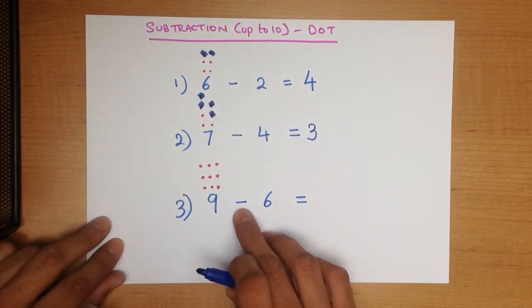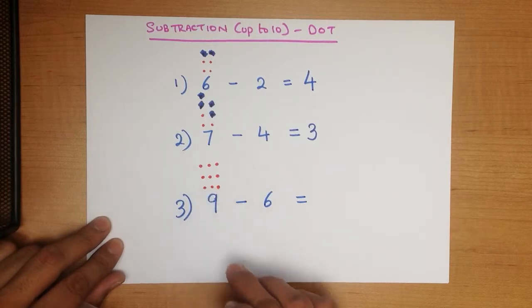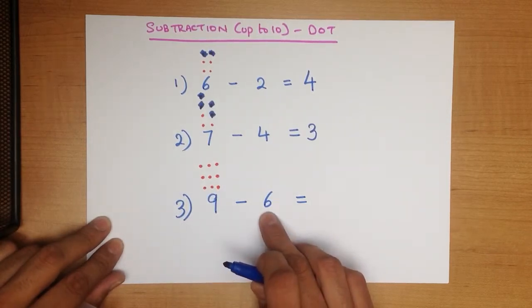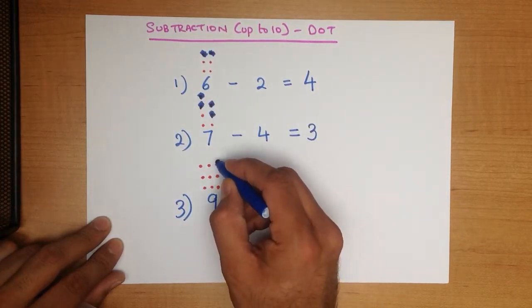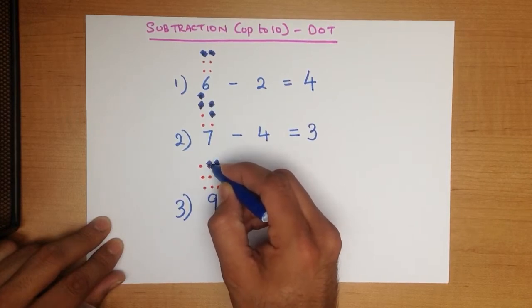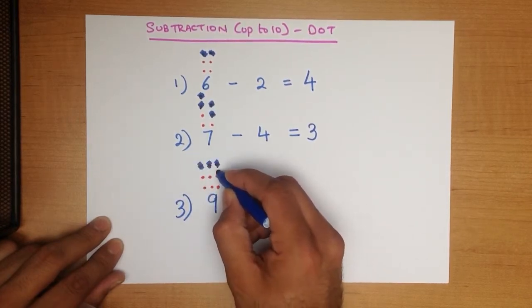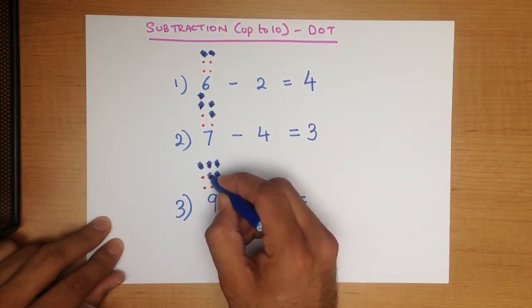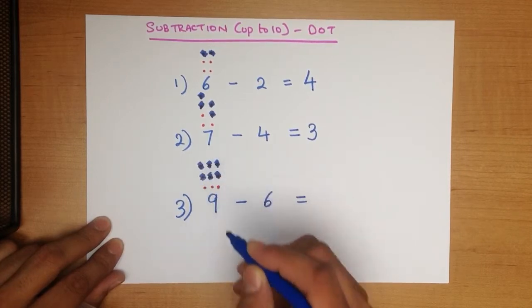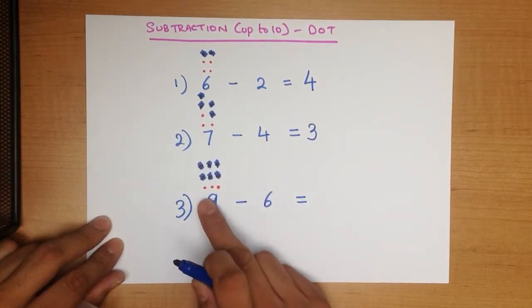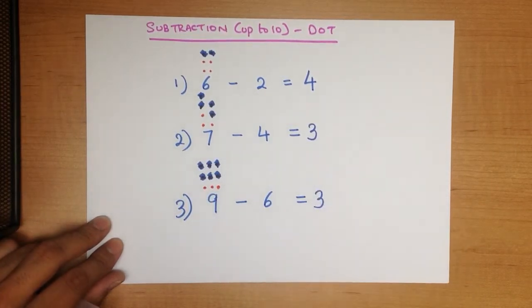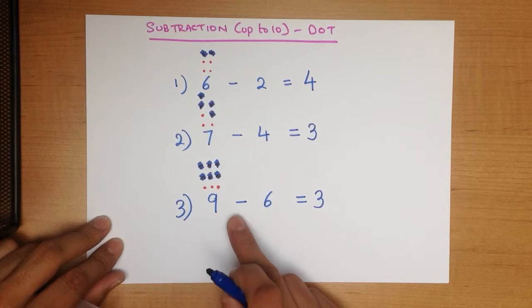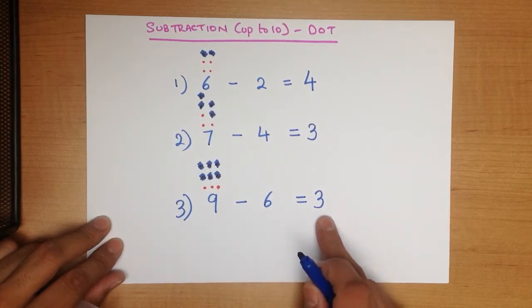And because we are taking away, what we are going to do is we are going to cross out a few of these dots. How many? We are going to cross out 6. So let's cross out 6 dots. 1, 2, 3, 4, 5, 6. How many dots are left? 1, 2, 3. And that's our answer. 9 minus 6 equals 3.